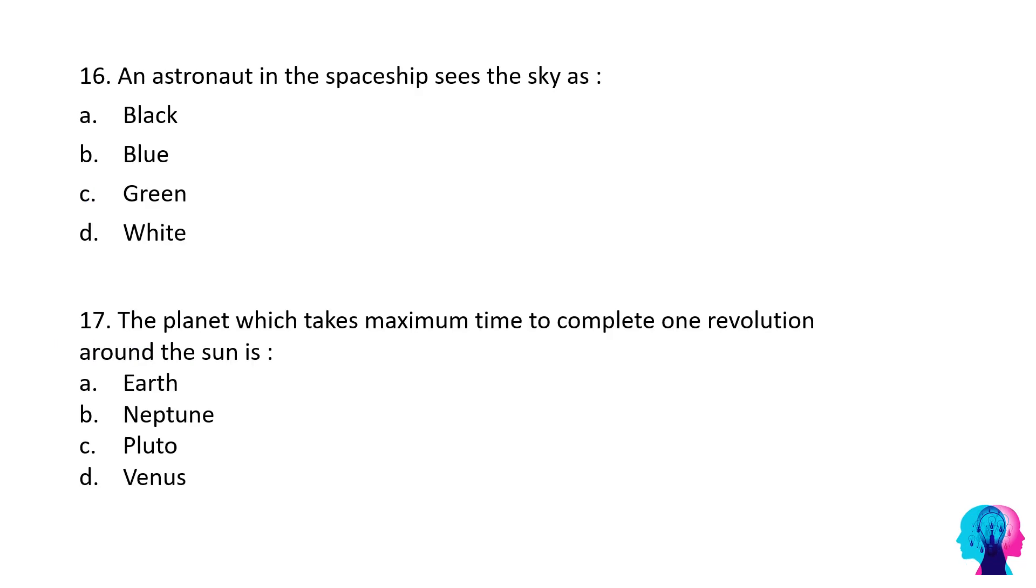An astronaut in the spaceship sees the sky as black, blue, green, or white? The correct option would be black. Why black? Because there are no particles in space, so there is no scattered light, and hence no light will reach the astronaut. The astronaut in the outer space will observe the sky as black.